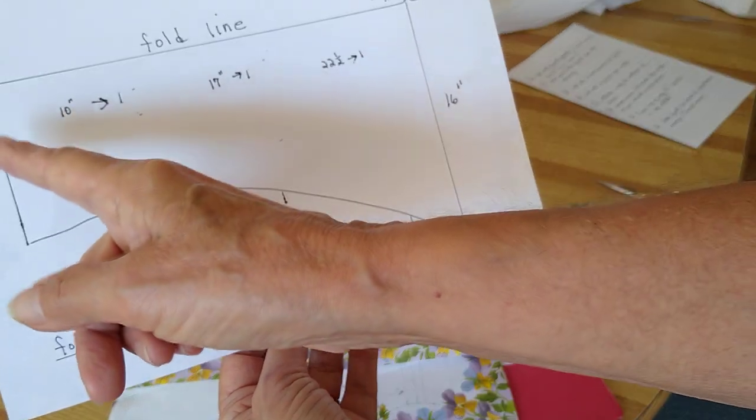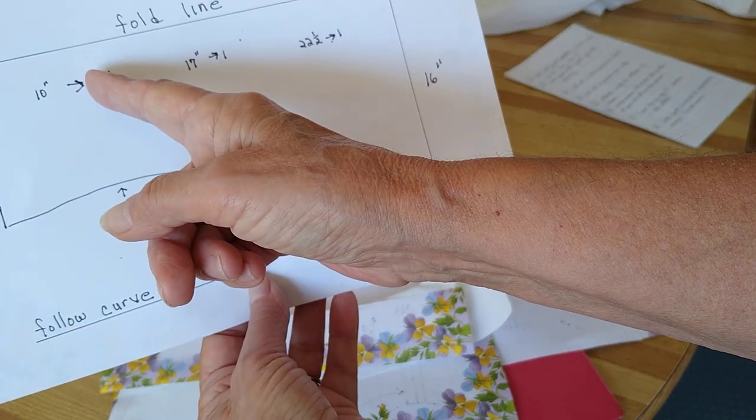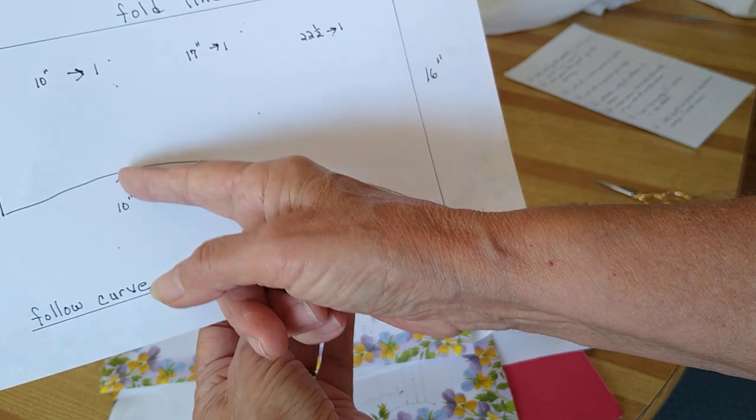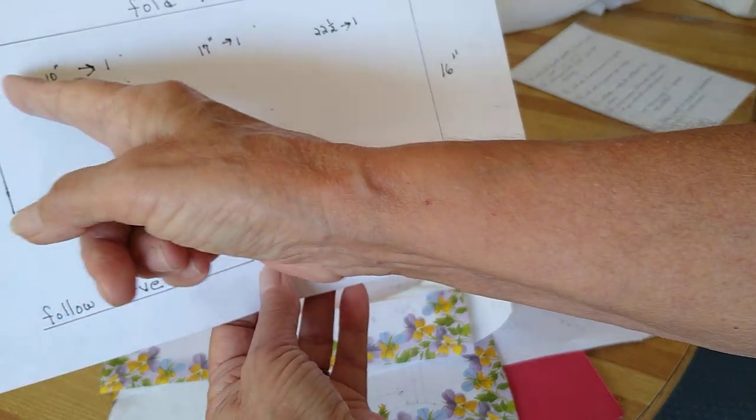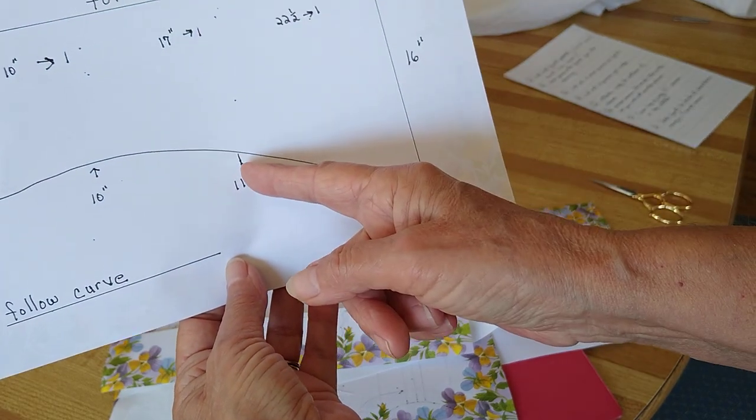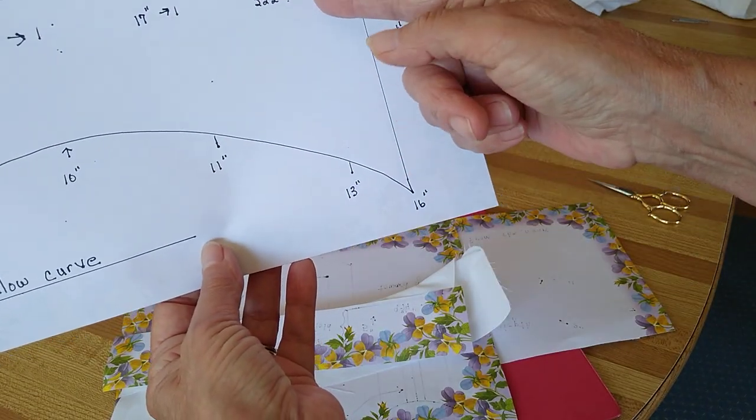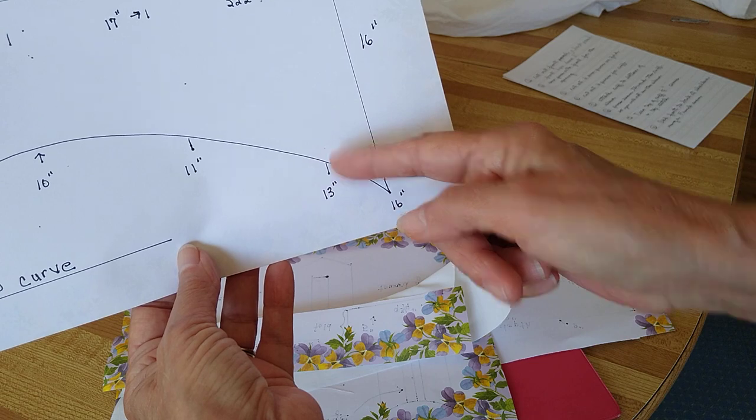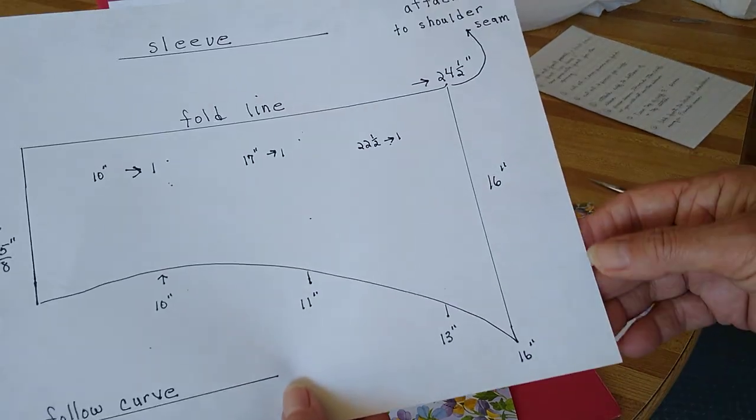Then I want you to take the pattern and from here measure 10 inches down, put a mark. 10 inches down over here, mark 17 inches, put a dot here at 11 inches. Start here 22 and a half, come down 13 inches, and then make the curve. You'll need to cut two of these out.